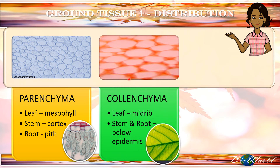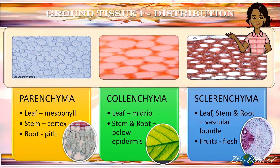Collenchyma cells are found in the leaf mainly concentrated at the mid-ribs of the leaf. In the stem and the root, collenchyma cells are positioned below the epidermis. Likewise, sclerenchyma cells can be found in leaf, stem and root, but they normally are in the vascular bundle. You can also find sclerenchyma cells in the flesh of fruits. This microscope image shows a cross-section of a fruit where you can see the seeds of the fruit and the flesh of the fruit. The purple little dots that you see are the sclerenchyma tissues.